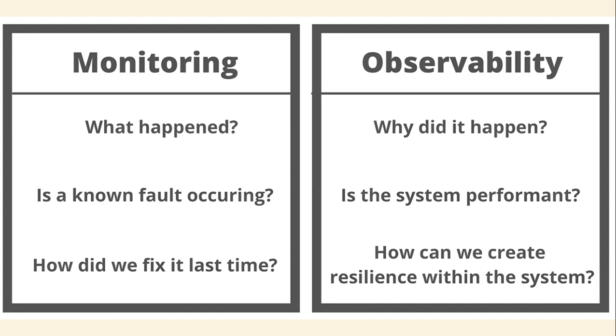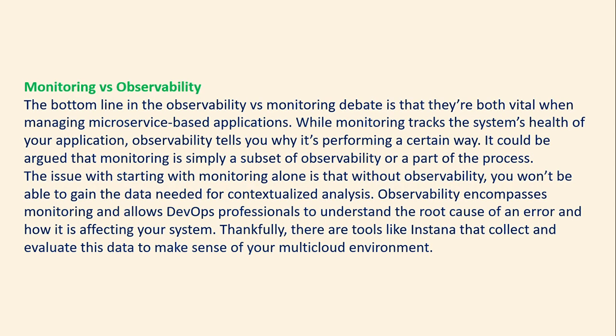So if you need to know what happened, monitoring is there for it. If you need to know why it happened, that information is given by observability. You will come to know about the fault using monitoring, whereas with observability you understand system performance. The bottom line is that observability is essentially universal monitoring. Both are vital when managing microservice-based applications. While monitoring tracks the system health of the application, observability tells you why it is performing in a certain way. Monitoring can be argued to be simply a subset of observability or part of the process.